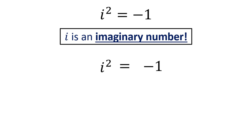Now, if we take the square root of both sides, you might think that we should get i is equal to plus or minus the square root of negative 1. But usually we don't consider the plus or minus here, since we are already kind of in imaginary land anyways.